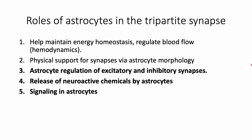Astrocytes were long thought of as inert cells of the brain that didn't have much function other than holding cells together. They were then discovered to help neurons maintain energy homeostasis and assisted in regulating blood flow in the brain. Much more recently it has been discovered that astrocytes play a much more active role, including regulating synaptic neurotransmission by sensing neurotransmitters, releasing neuroactive chemicals, and having their own signaling mechanism. We will go over these last three points in this video.